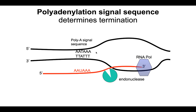Finally, RNA polymerase reaches the poly-A signal sequence — AATAAA in the RNA — which in the template strand reads TTATTT. That sequence appears within the RNA, and when it does, a specific endonuclease recognizes it. This enzyme, which cuts RNA, recognizes the poly-A signal sequence, cuts the RNA, the RNA polymerase falls off, and that ends transcription.